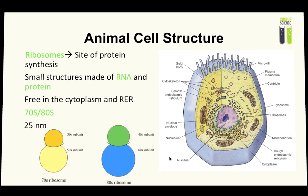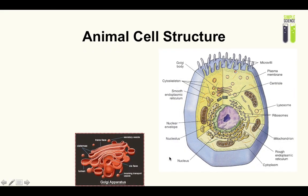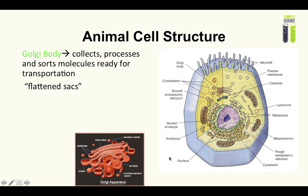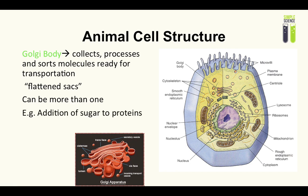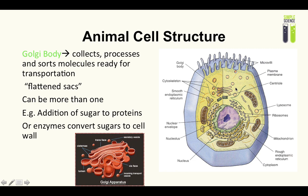Now let's check out the next organelle. It has a lot of names, but I like to call it the Golgi body because it's really simple. It can also be known as the Golgi apparatus or the Golgi complex. Basically, it's a stack of flattened sacs.